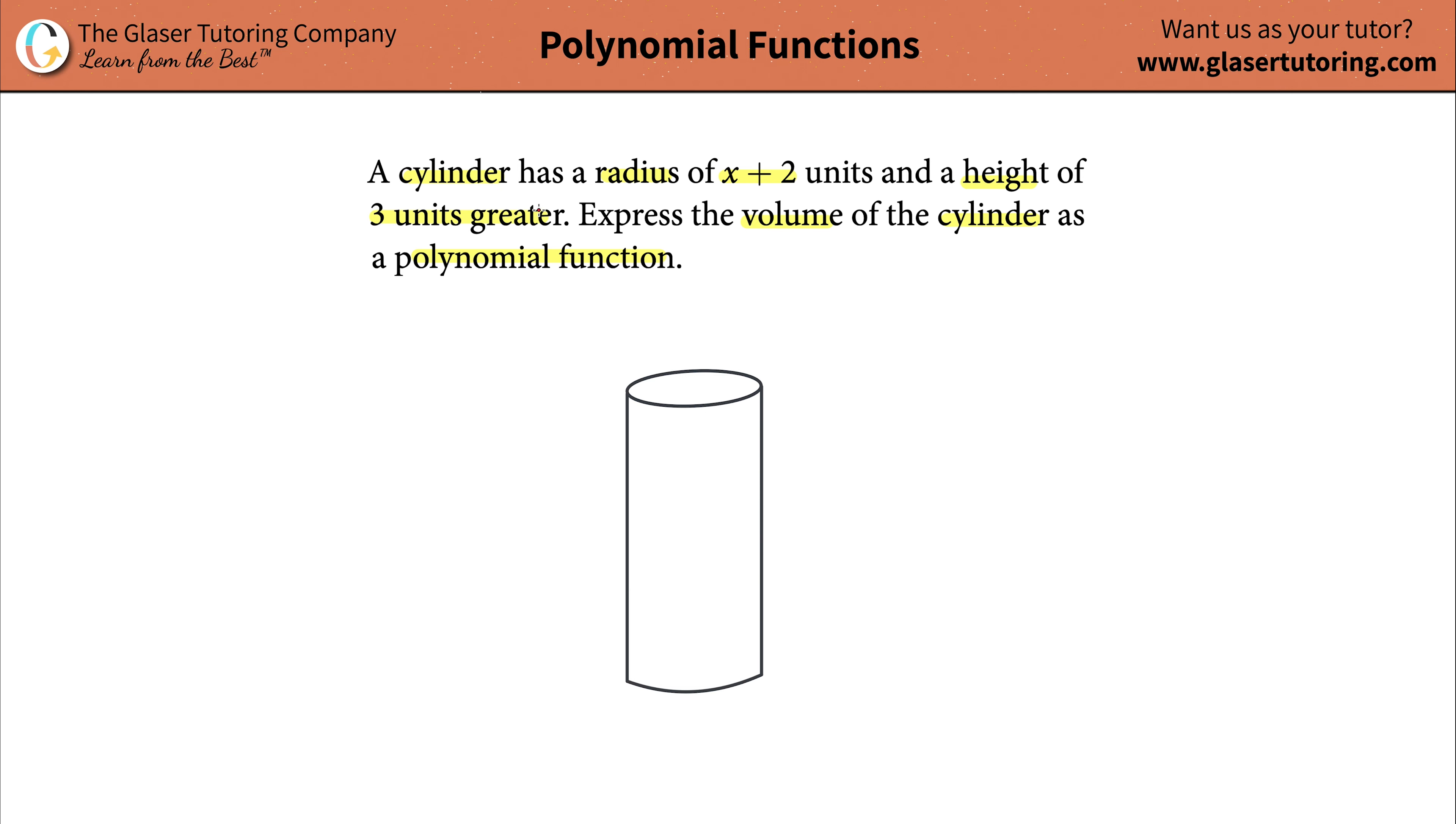Now, what do we know about the cylinder? So that takes care of the first word. Basically, now what I'm going to do is I'm going to take this literally word for word. A cylinder has a radius. Radius, right? Half of that circular diameter, of x plus 2. So the length here of this radius is going to be x plus 2.